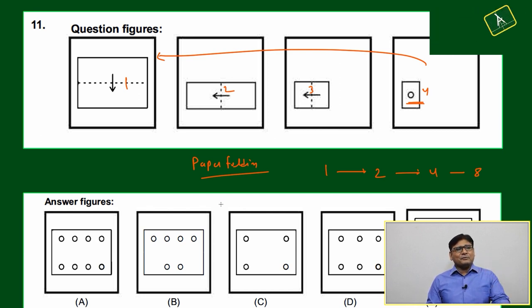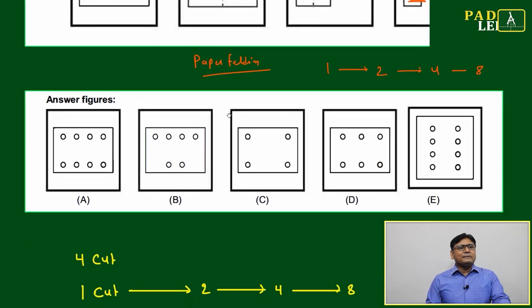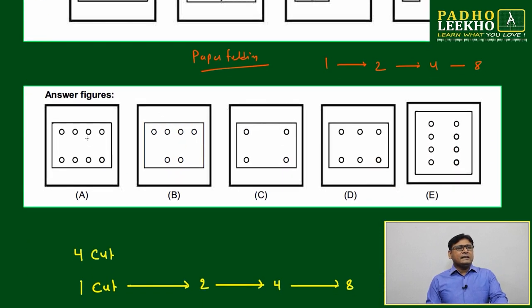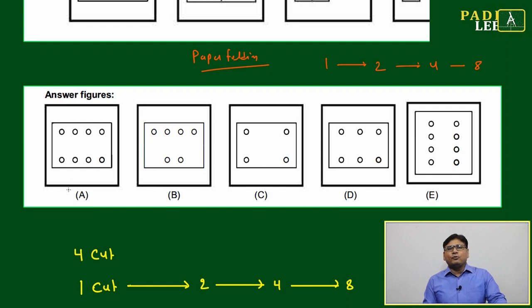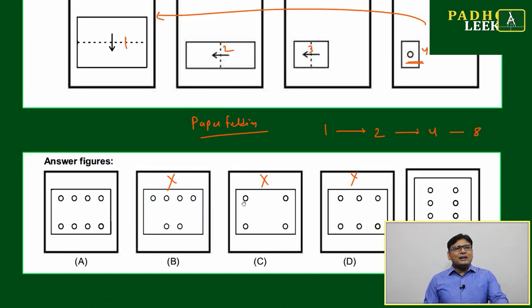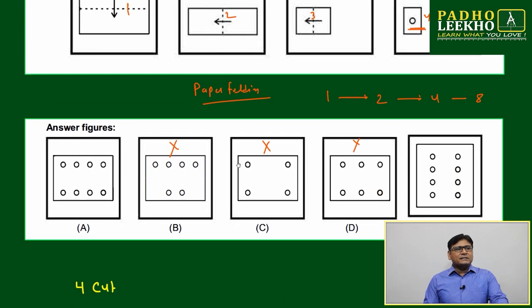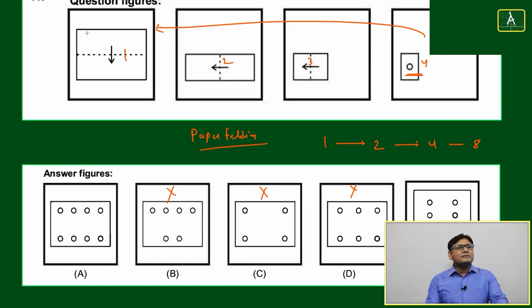You must have eight holes. Let's look at the given option choices and count how many holes are there. Option A has six holes, rejected. Here four, rejected. Here six, rejected. Here also eight. Between option A and E only, the possible solution. Now how can we say option A is the correct option? Just by looking itself, this is your lateral position, so option A is correct. If it is vertical position, then option E would be correct.